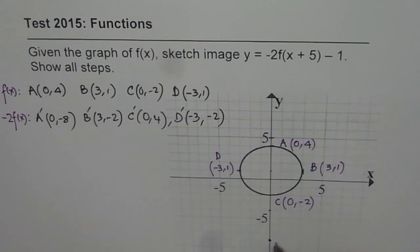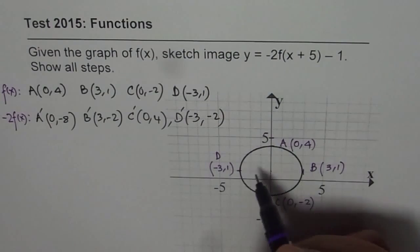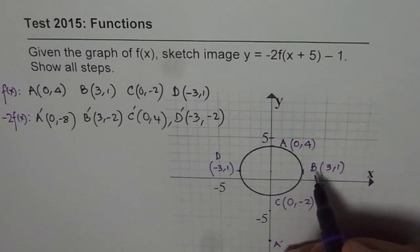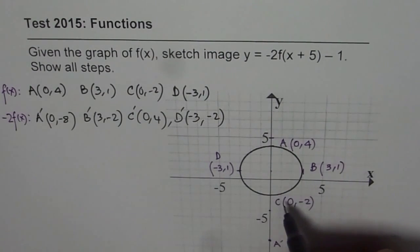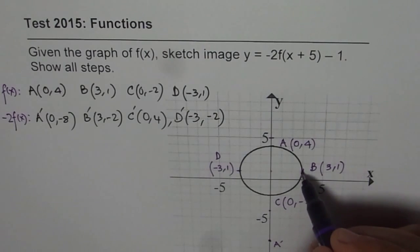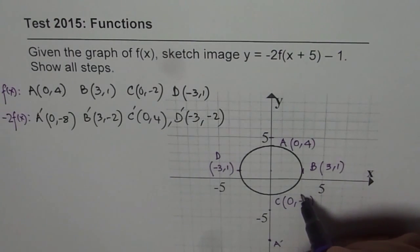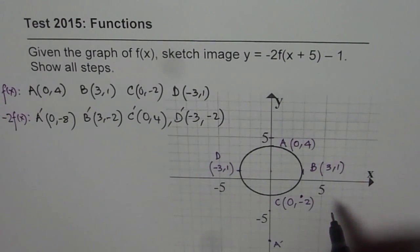So that becomes the position for A dash. Similarly, all of the points. So this point, which is B for us, it is 1 unit above, it comes down 1 unit, gets multiplied. So that is the position and that is B dash.